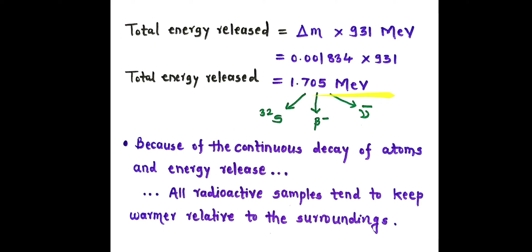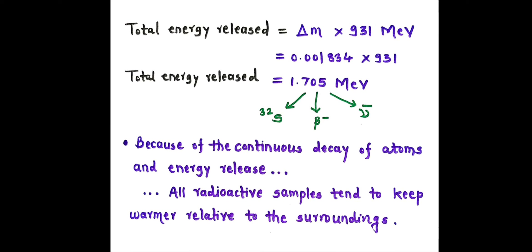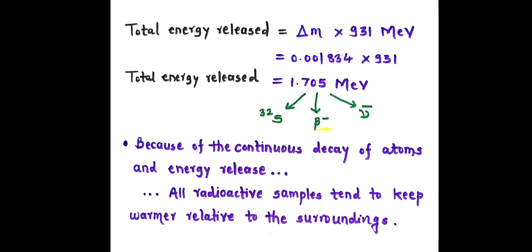That released energy is shared between the recoil atom sulfur-32, beta minus, and anti-neutrino — these three share the total energy released. Because of the continuous decay of atoms and energy release, all radioactive samples tend to keep warmer relative to the surroundings. So radioactive samples are warmer relative to their surroundings.